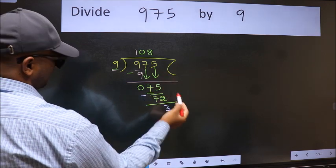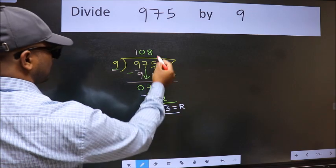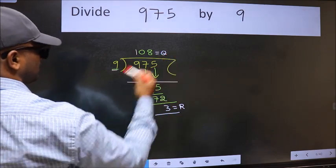No more numbers to bring it down. So we stop here. This is our remainder and this is our quotient.